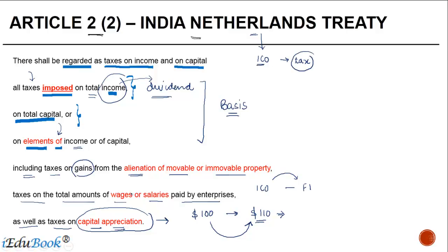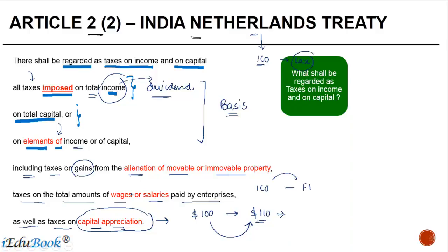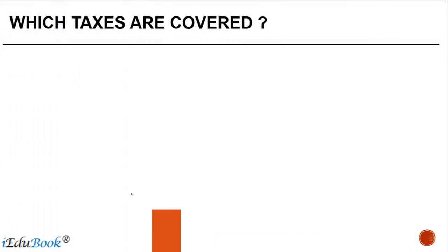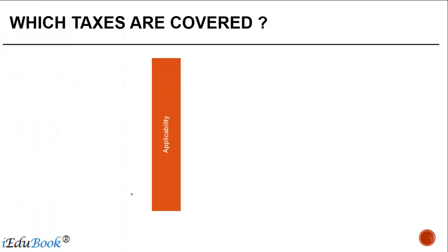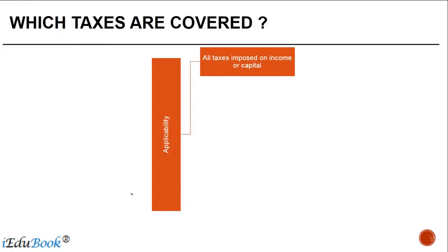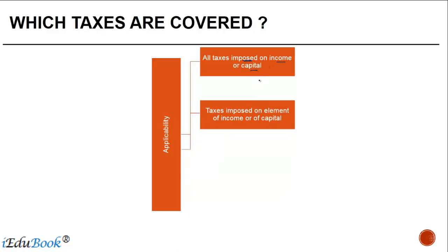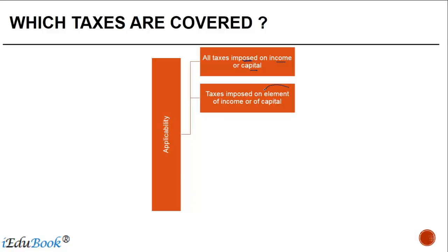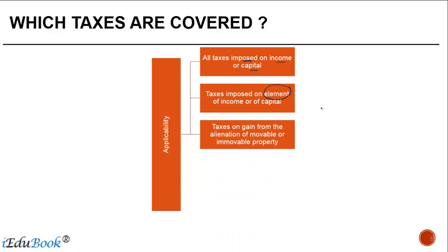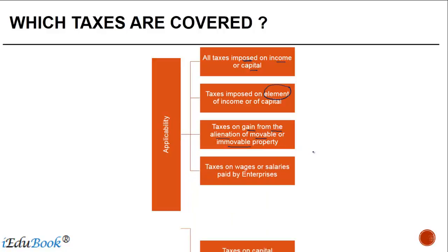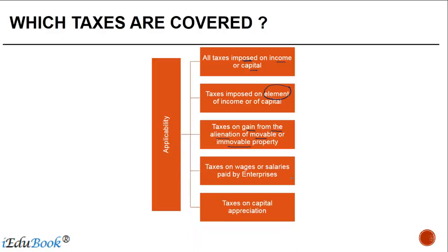To summarize which taxes are covered under Article 2.2: all taxes imposed on income or capital; taxes imposed on elements of income or of capital; taxes on gain from alienation of movable or immovable property; taxes on wages and salaries paid by enterprises; and taxes on capital appreciation.